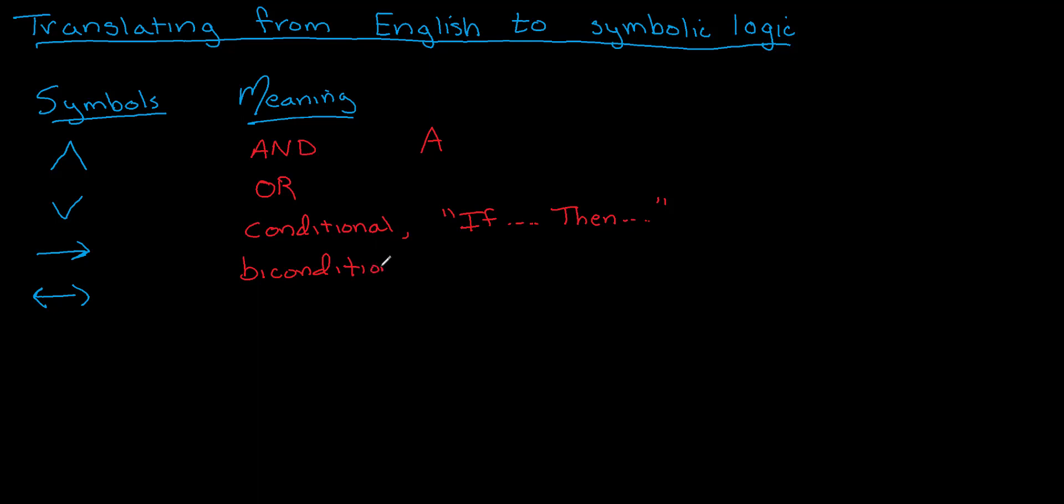The last symbol you'll see in our textbook is this kind of angled symbol. Sometimes you'll also see a little squiggly line, like a tilde. Both of those symbols mean NOT—that's a negation.